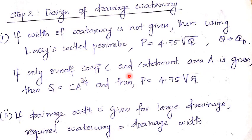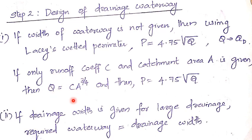Step 2: Design of drainage waterway. If the width of the river is not given, use Lacey's wetted perimeter: P = 4.75√Q. If discharge is not given but runoff coefficient C and catchment area A are given, find Q = C·A^(3/4), then compute P. The width of the drainage equals the length of the aqueduct — similar to how the width of a river equals the length of a bridge.